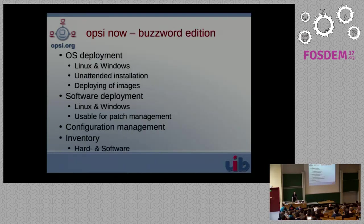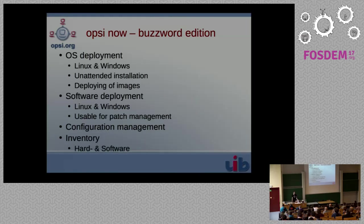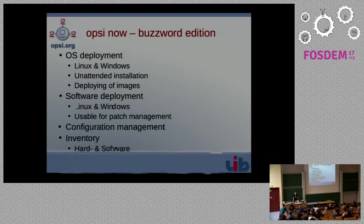Here are the buzzwords to give you an overview of what Opsi does. We still do operating system deployments, still relying on unattended installation. We don't just support Windows — we also support Linux. You can nowadays also deploy complete images of your systems if unattended installation takes too long or some software is hard to install that way. Software deployment is still a thing, because just an operating system usually isn't enough — if you want something working with your system, you also need software on that machine, and this is something Opsi also does.